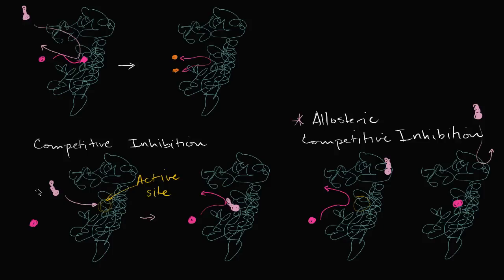In the video on competitive inhibition, we saw that competitive inhibition is all about a substrate or a potential substrate — an inhibitor competing for the enzyme. Whoever gets there first gets the enzyme. If the inhibitor gets there first, then the substrate isn't able to bind, and no reaction is catalyzed. If the substrate gets there first, then the inhibitor isn't able to bind, and the reaction does get catalyzed.